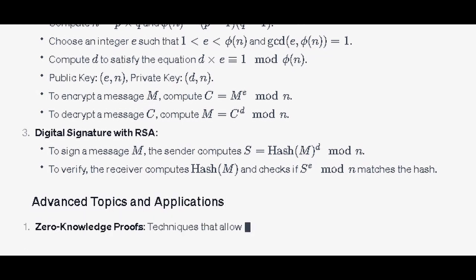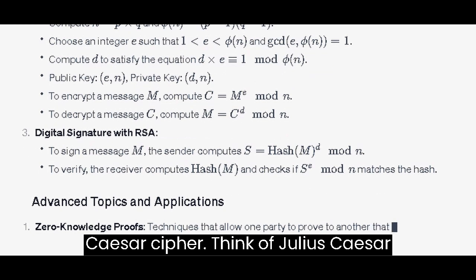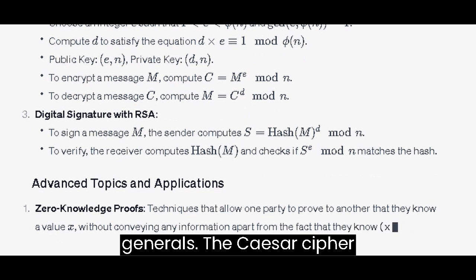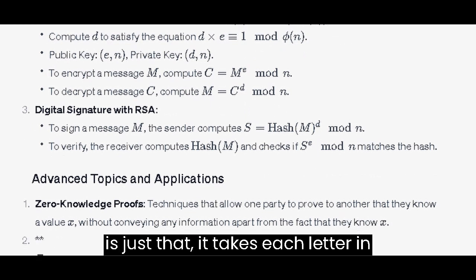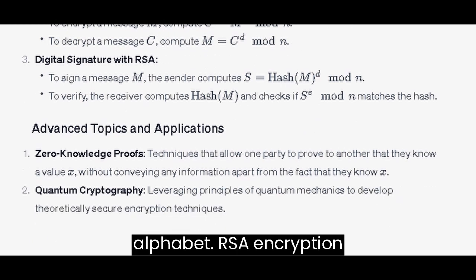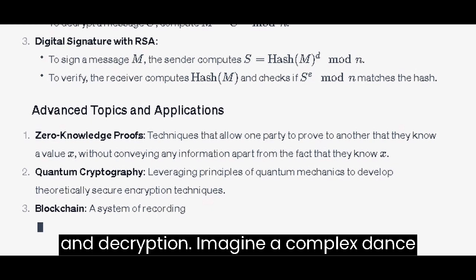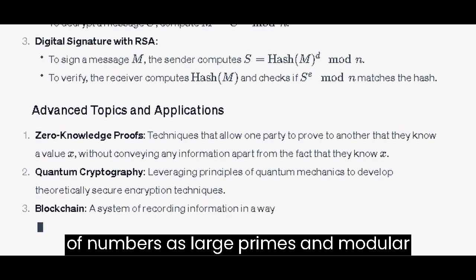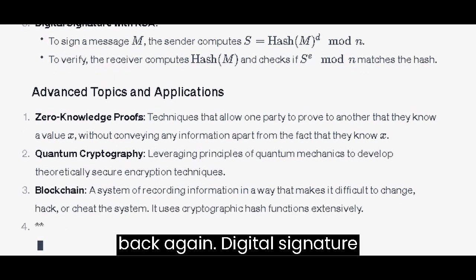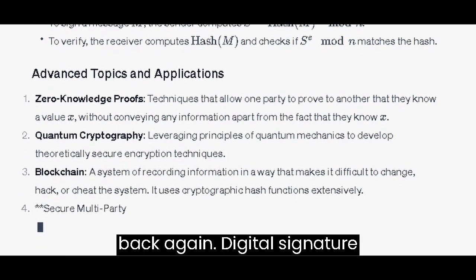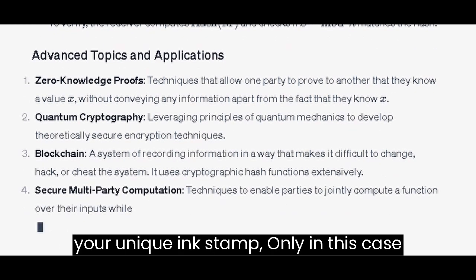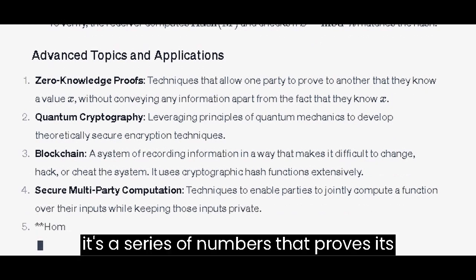Intriguing Examples. Caesar Cipher: think of Julius Caesar sending coded military orders to his generals. The Caesar Cipher takes each letter in your message and shifts it down the alphabet. RSA Encryption and Decryption: imagine a complex dance of numbers, as large primes and modular arithmetic intermingle to transform your message into a fortress of numbers and back again. Digital Signature with RSA: picture sending a document with your unique ink stamp — only in this case, it's a series of numbers that proves its authenticity.